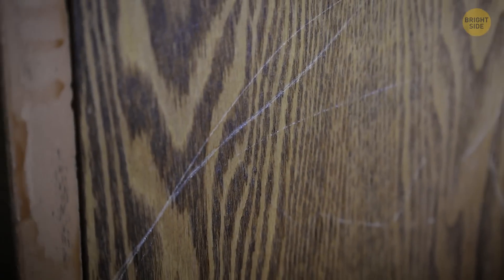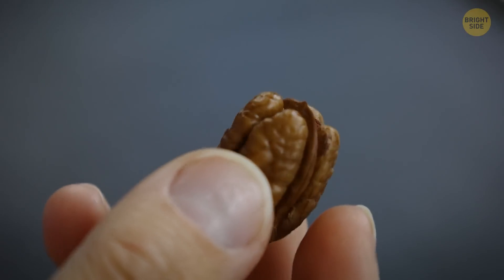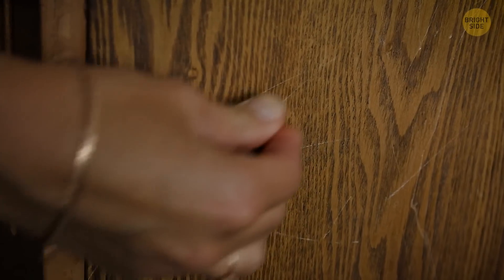Scratches, nicks, and marks made on wooden furniture can be re-stained with a pecan by simply rubbing it on the scratched or damaged area.